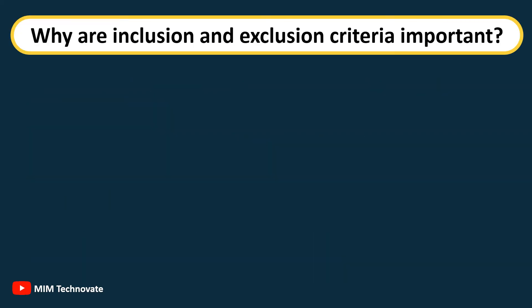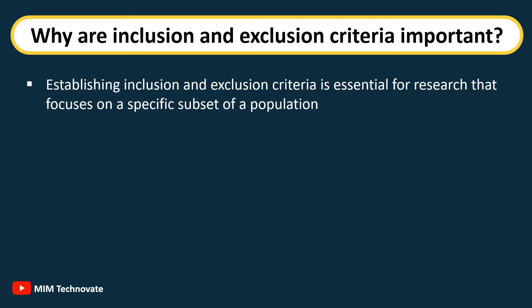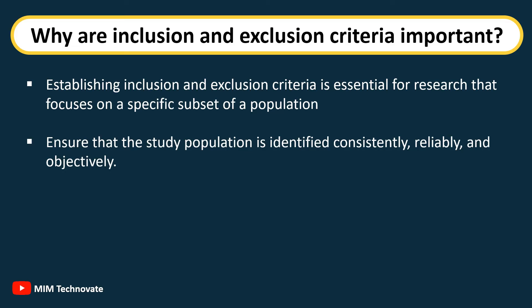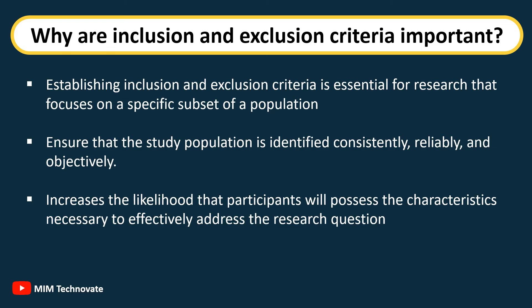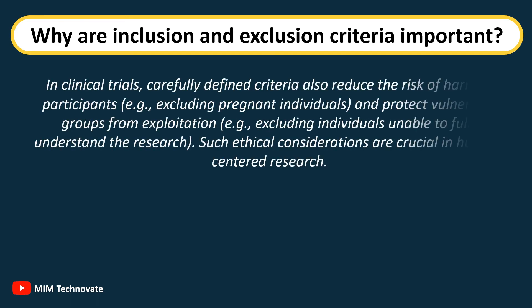Establishing inclusion and exclusion criteria is essential for research focused on a specific subset of a population. These criteria ensure that the study population is identified consistently, reliably, and objectively, increasing the likelihood that participants possess the characteristics necessary to address the research question. In clinical trials, carefully defined criteria also reduce the risk of harm to participants — for example, excluding pregnant individuals — and protect vulnerable groups from exploitation, such as excluding individuals unable to fully understand the research.